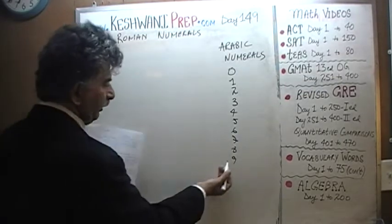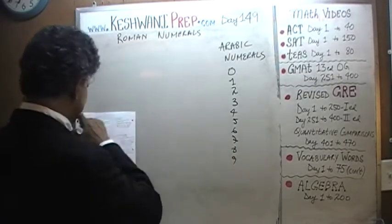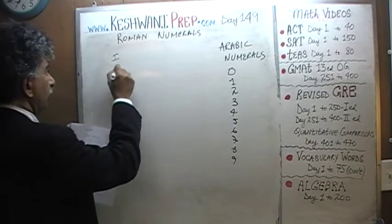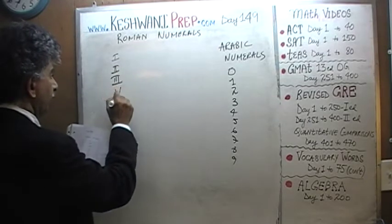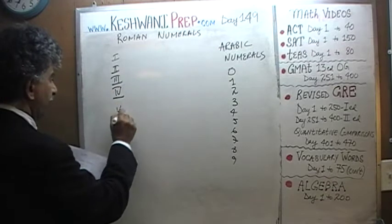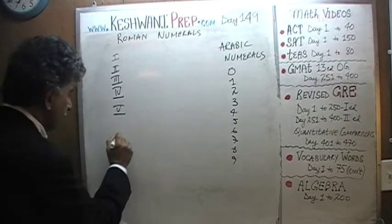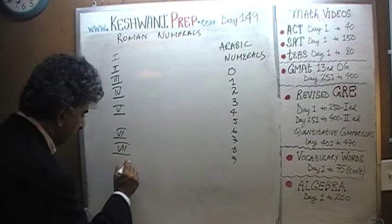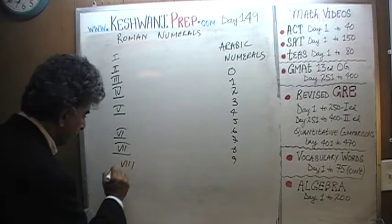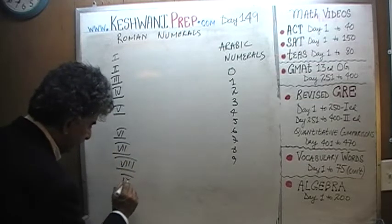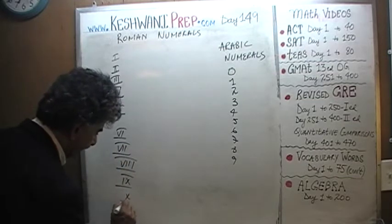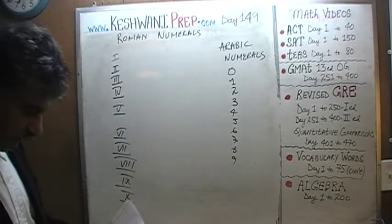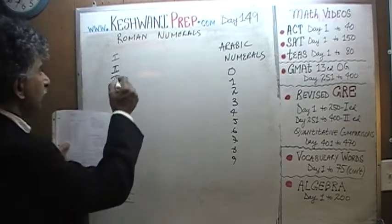So here we have 1 through 9 — same thing. We'll have 1, 2, 3, 4, 5, 6, 7, 8, 9, and 10. There is nothing to it. Very straightforward, very simple. Now let's do something more.